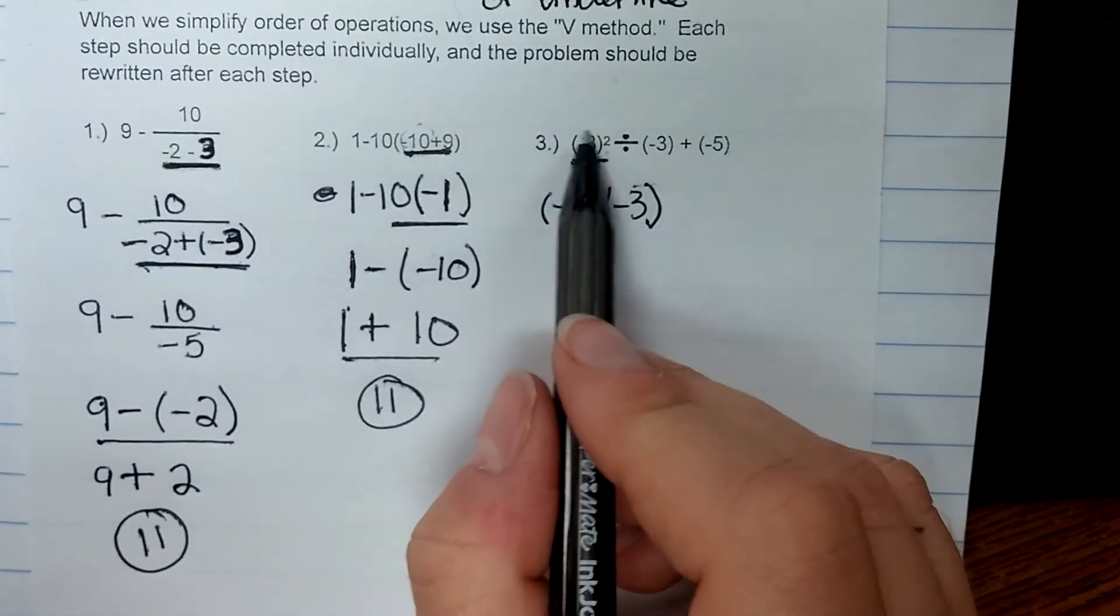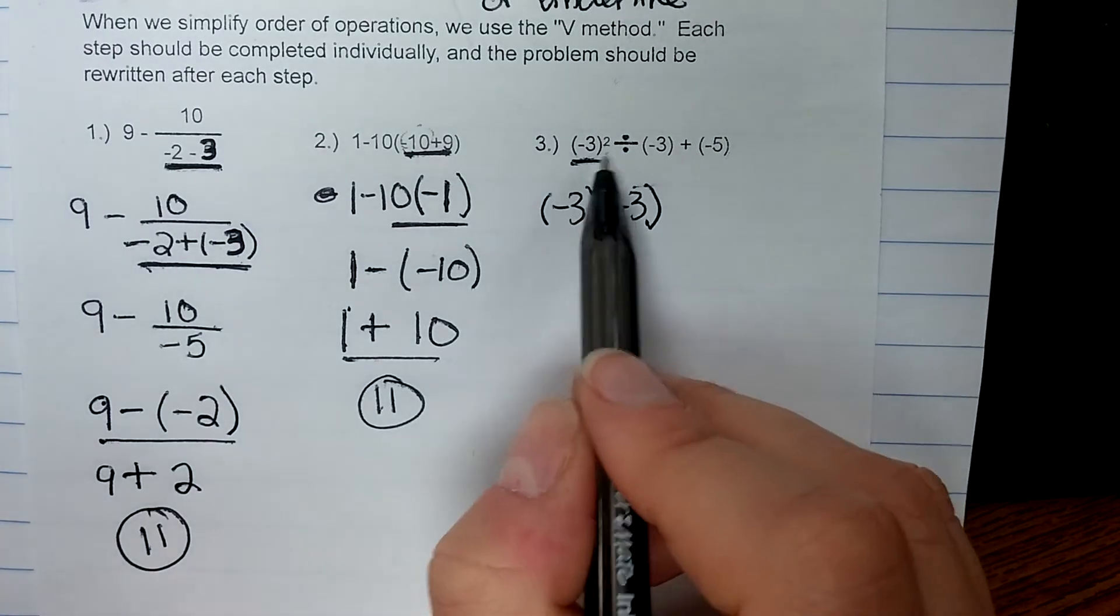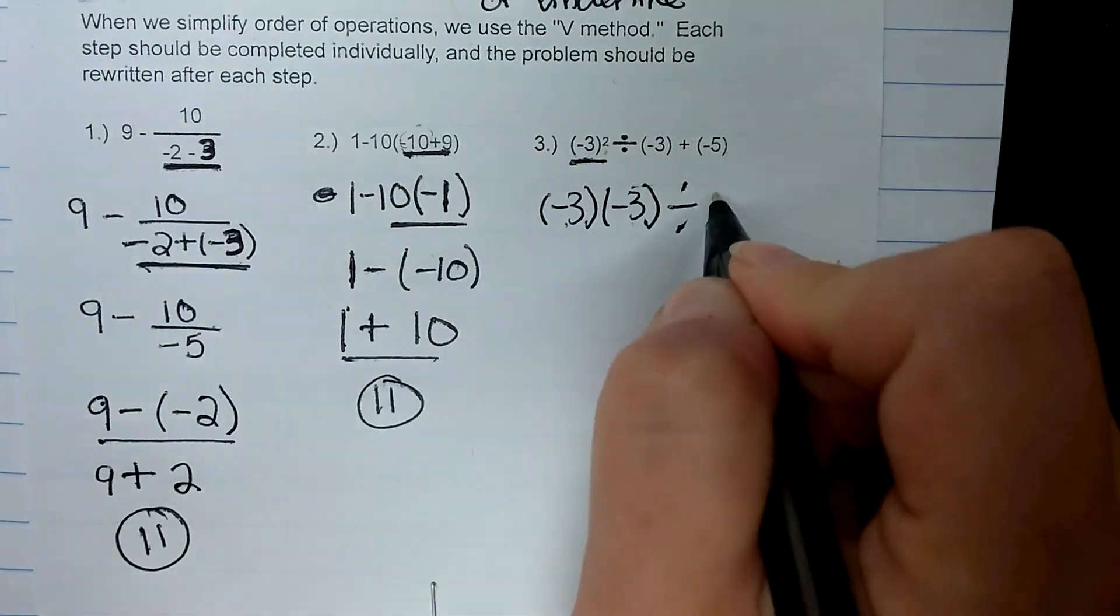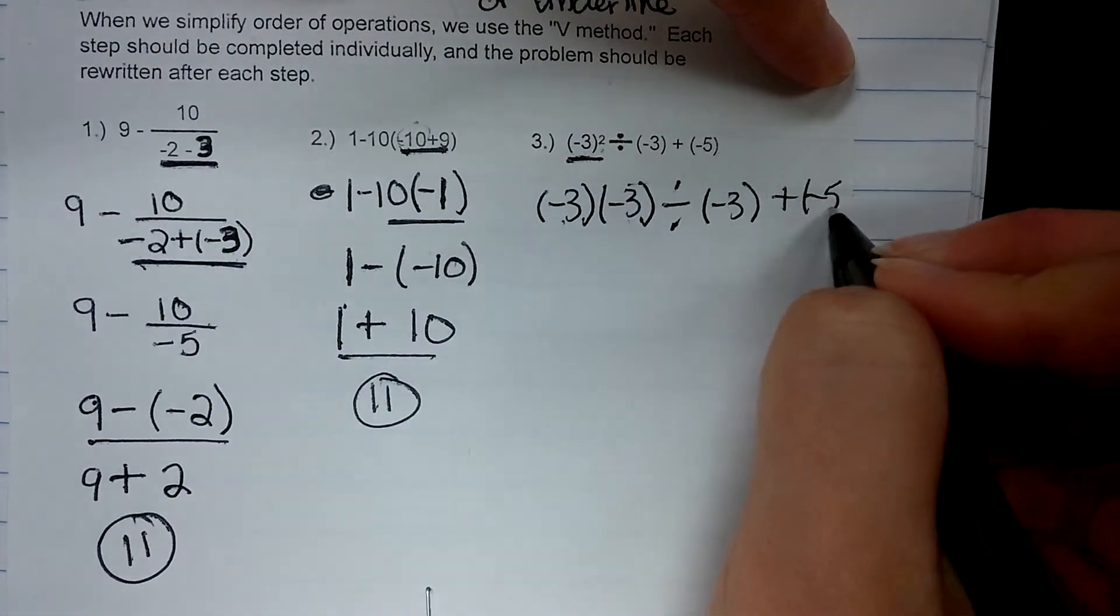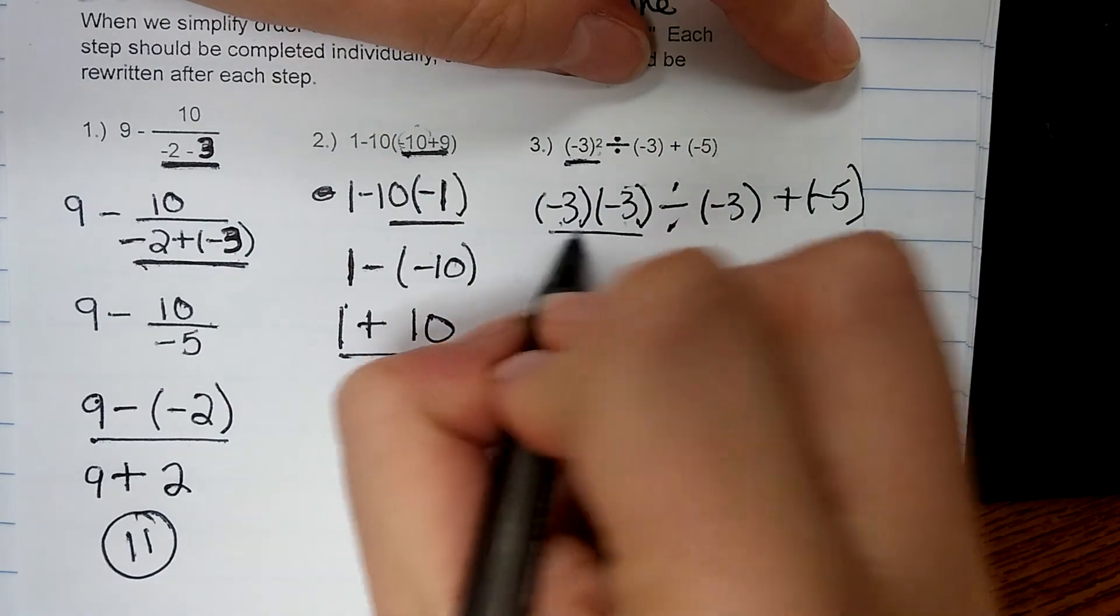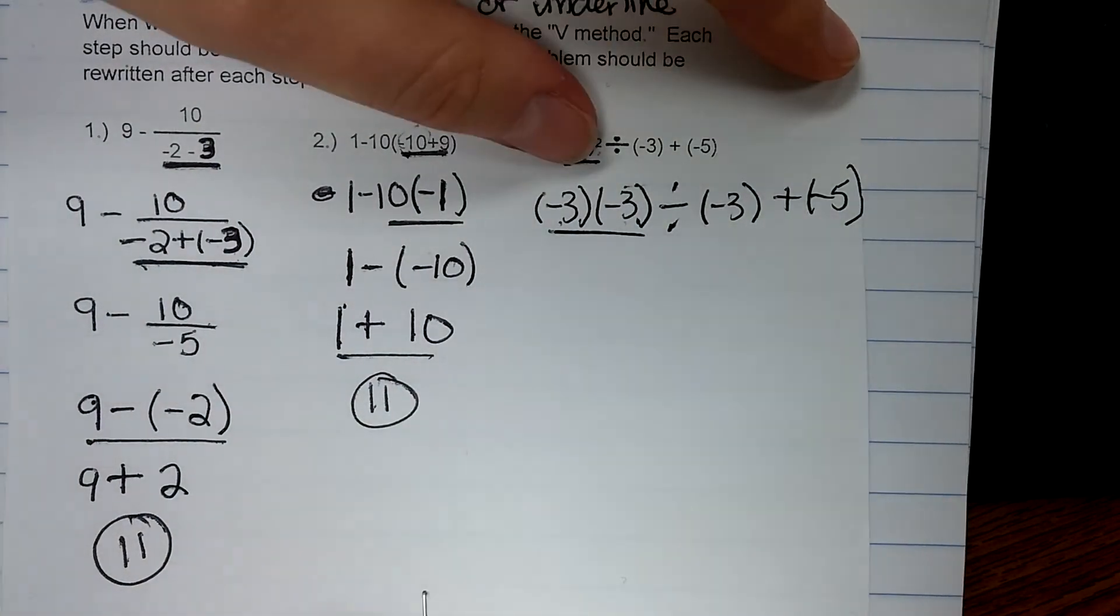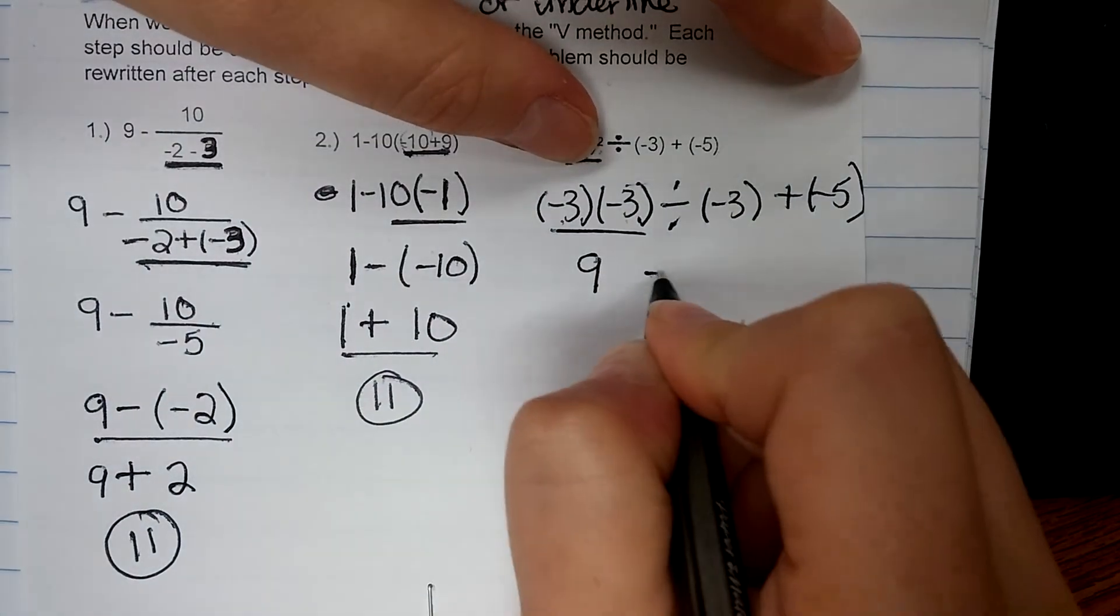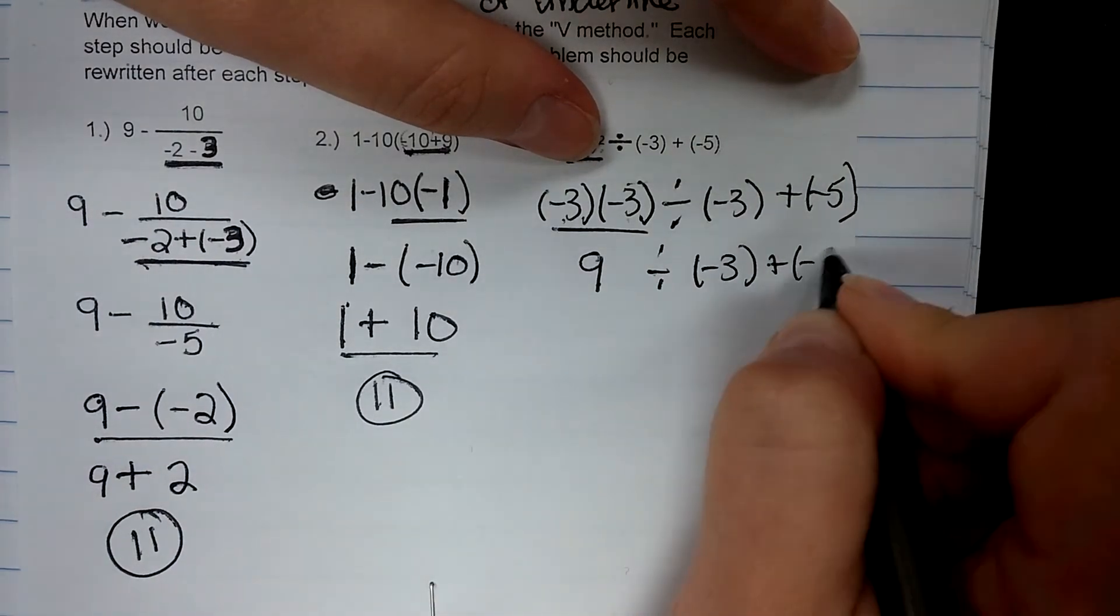This is, again, your base, and that's used as a repeated multiplication. We use that twice, so negative 3 times negative 3 divided by negative 3 plus negative 5. All right, next step is multiplication, so I can underline negative 3 times negative 3. Signs are the same, so my answer is going to be positive, and 3 times 3 is 9. So I have 9 divided by negative 3 plus negative 5.